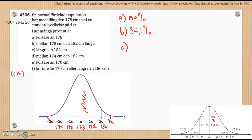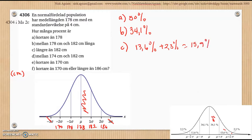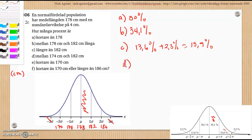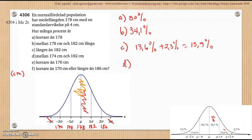Längre än — plus den, så har vi 13,6%. Plus den, så har vi 13,6%, och där är med 2,3%. Så har vi 15,9%, eller 16%. Ni får skriva om ni vill ha 16%. Mellan 174 och 182. Det betyder att vi har 34,1%, och där är med 34,1%, och det är 68,2%.